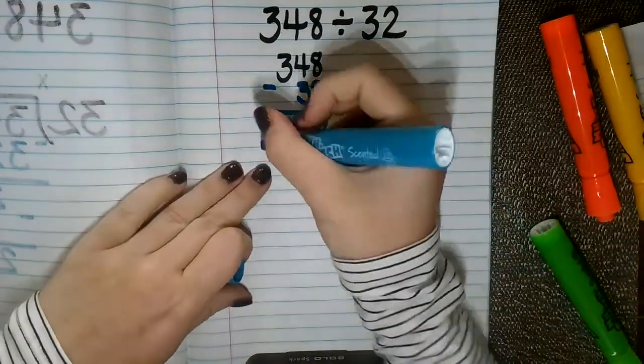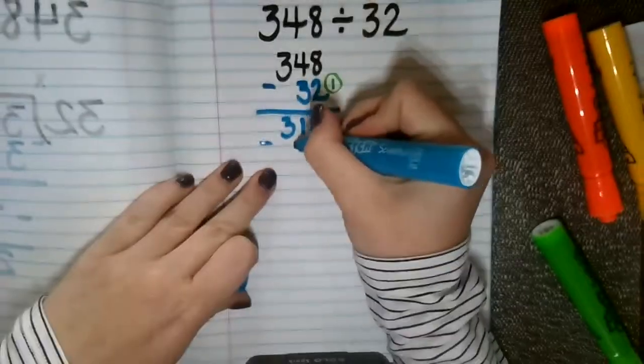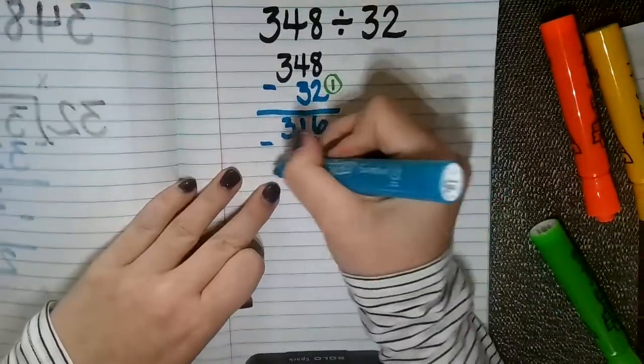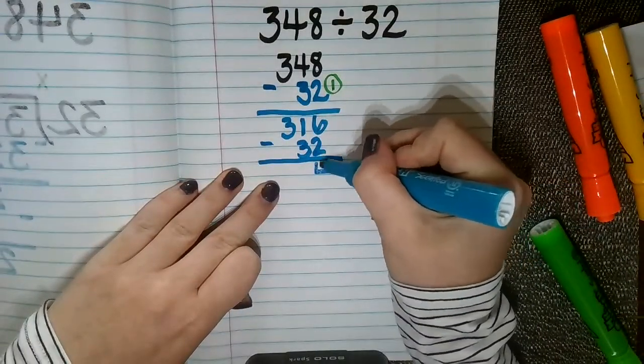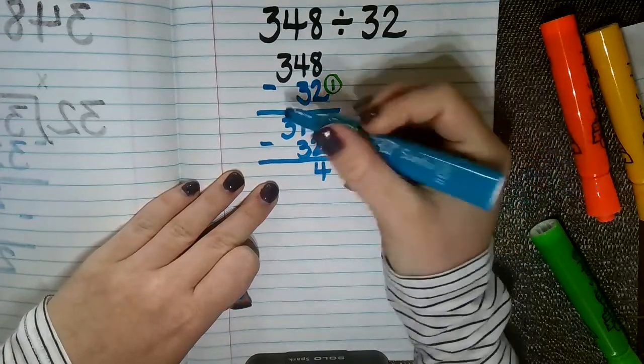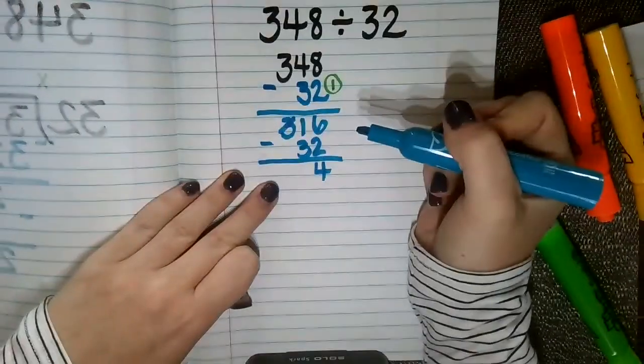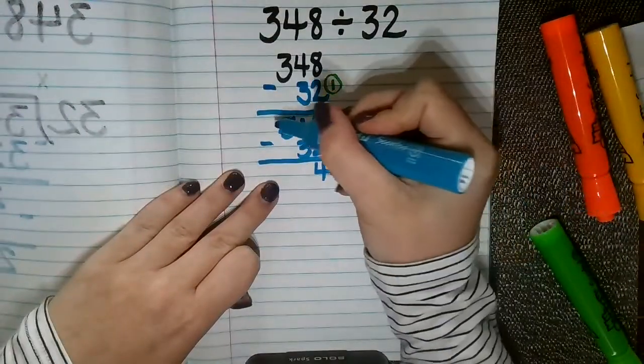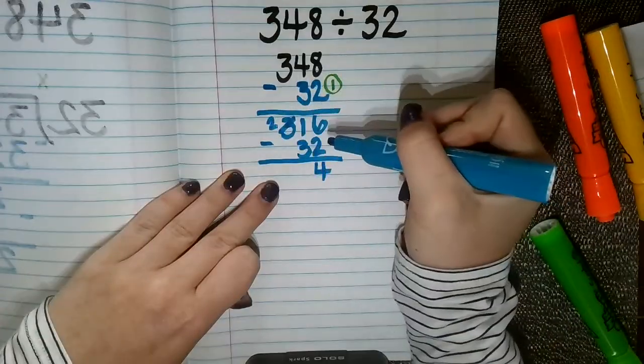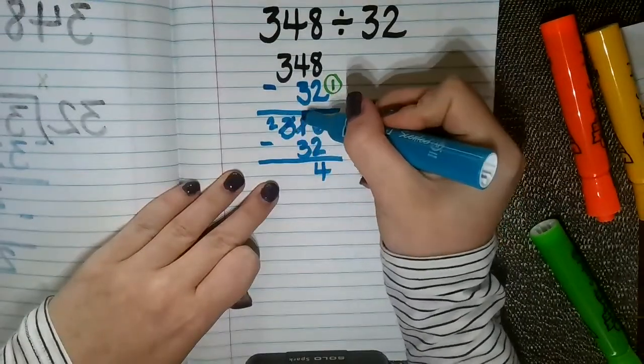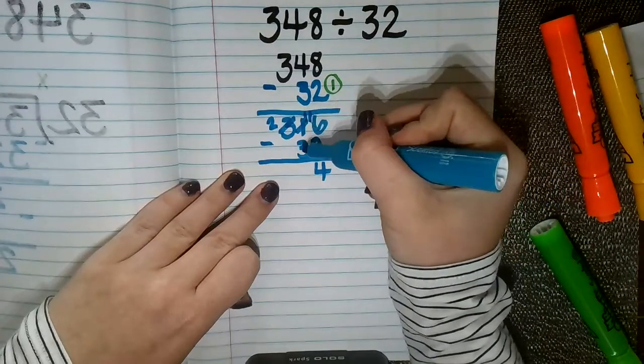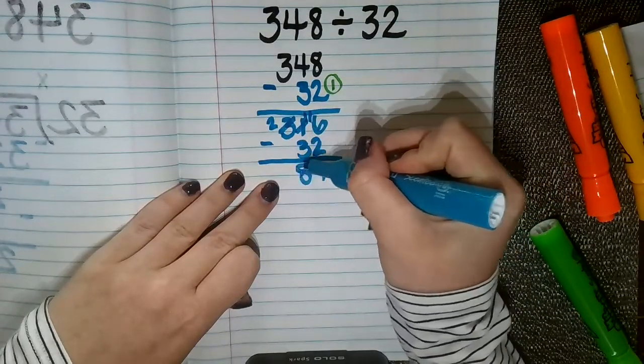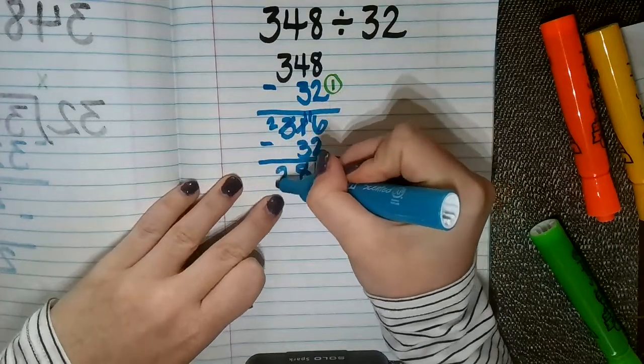So I'm going to do that again. I'm going to repeatedly subtract, so I'm going to subtract 32. 6 minus 2 is 4. 1 minus 3 I can't do that, so I'm going to take it from the next largest place value, making the 3 a 2 and making this 1 an 11. Well, I know 11 minus 3 is 8, and 2 minus nothing is 2.